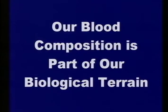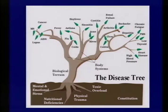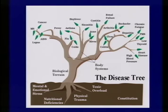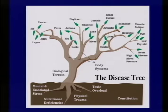Our blood is part of the biological terrain—that's the internal environment of the body. We use a model at the Tree of Light Institute called the disease tree. Disease has certain root causes that feed into the biological terrain, which is the fluids that bathe and irrigate all the cells of our body. When we look at blood, we're looking at that trunk of the disease tree, which helps us see what's underneath various diseases or symptoms, and helps us evaluate what we can do to make changes in the root cause—such as putting people on a better nutritional program.